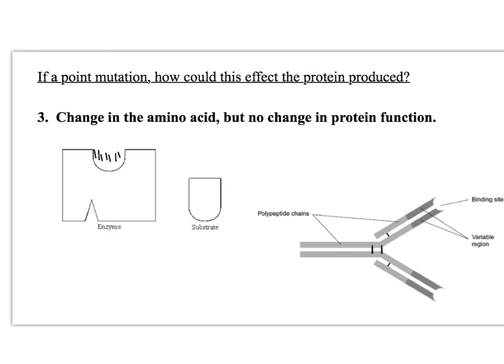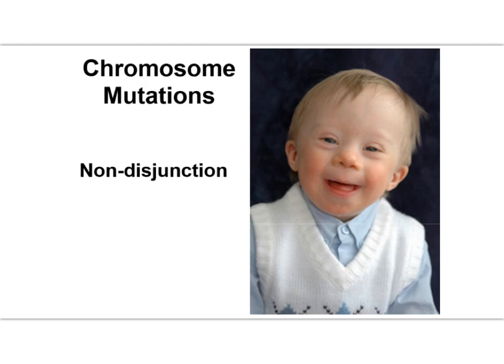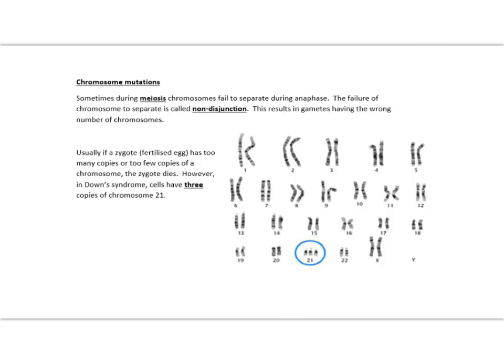There's another type of mutation: chromosome mutations. This doesn't happen during DNA replication and isn't a change in the nucleotide base sequence in DNA. Chromosome mutations occur during meiosis through a process known as non-disjunction, resulting in gametes having the wrong number of chromosomes. Chromosomes fail to split correctly — for example, three copies of chromosome 21 would result in someone having Down syndrome. You could also end up with only one copy of a chromosome in a gamete instead of the homologous pair. Most chromosome mutations are fatal and the fetus would be aborted during development, with a few exceptions.